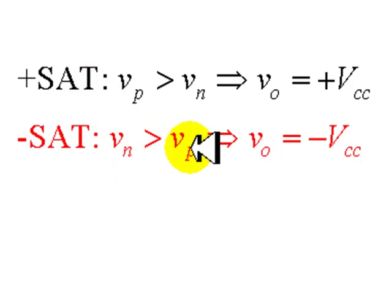If Vn is greater than Vp, in that case, the output voltage will be the negative of the power supply and we say that the op-amp is negative saturated.